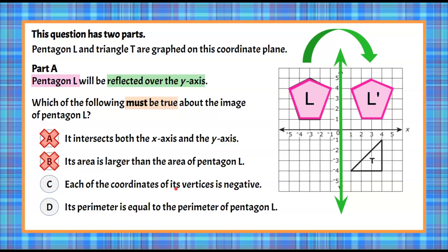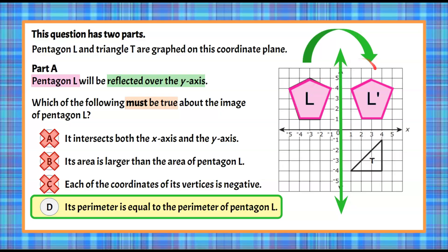Choice C says each of the coordinates of its vertices is negative. Since this image lies in the first quadrant, we know that every vertex is positive: positive two one, positive four one, positive five four, three five, and one four. So none of the coordinates of the vertices are negative. Choice D says its perimeter is equal to the perimeter of pentagon L — that is going to be true. Since it's a reflection, it needs to be the same size and shape, meaning they have the same area and the same perimeter. All sides are congruent.